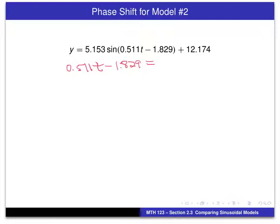So, what we're going to do is factor out the .511. And what that will leave us with is a T and then a subtraction. And just to kind of emphasize what we're doing here, what we get is 1.829 divided by 0.511. Sometimes it seems a little strange to make things a little more complicated.